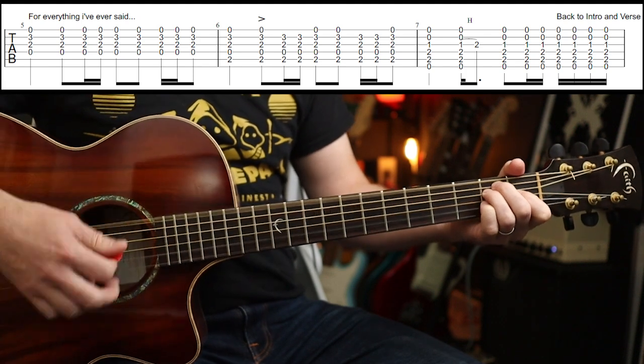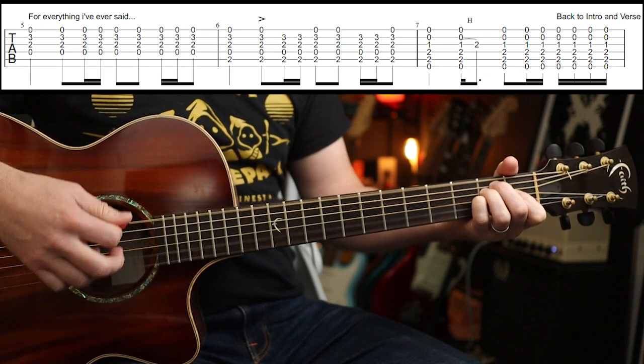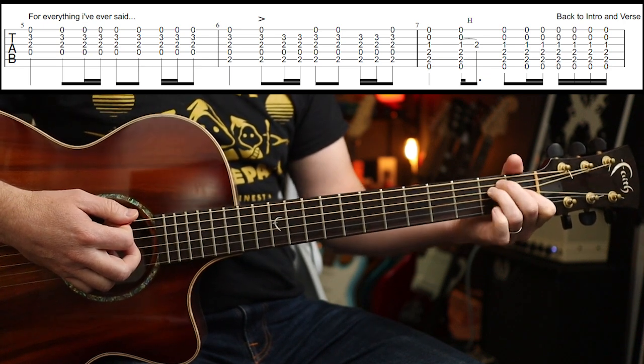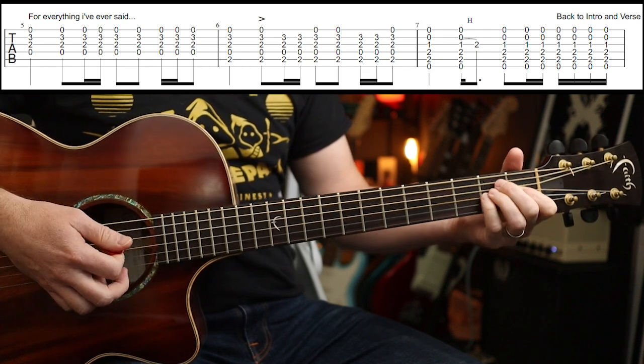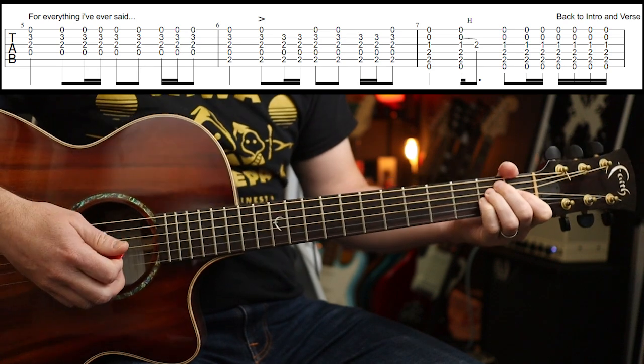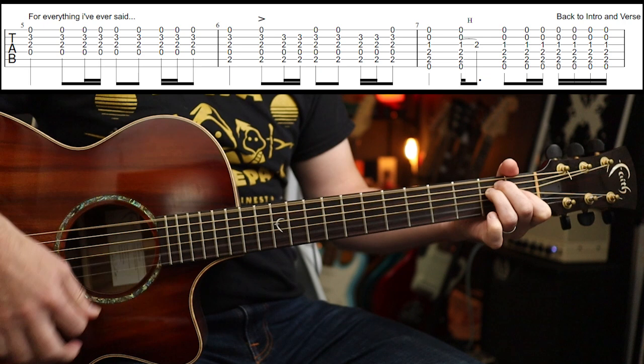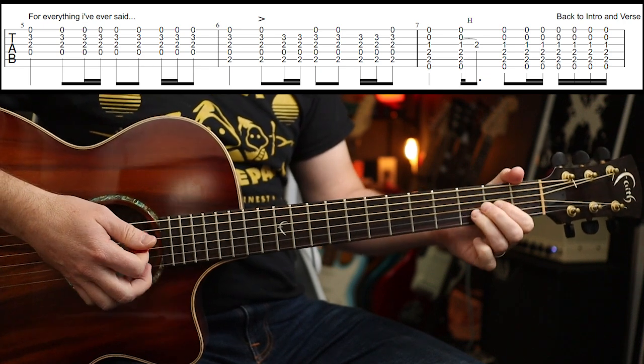To the B chord. Then, to an E. And he does a little sus4 thing, which is just a hammer-on from the, with your little finger onto the G string there, onto the second fret. And a bit of extra strumming at the end there.